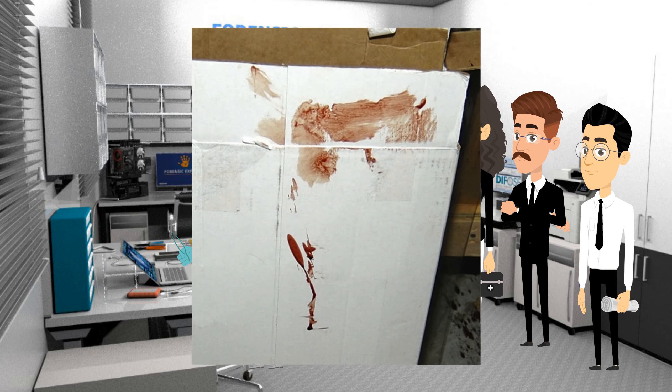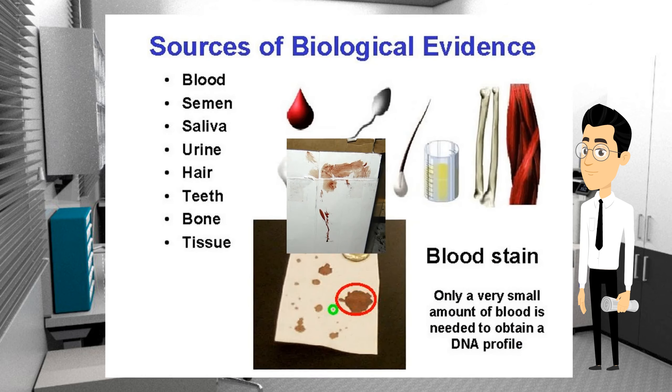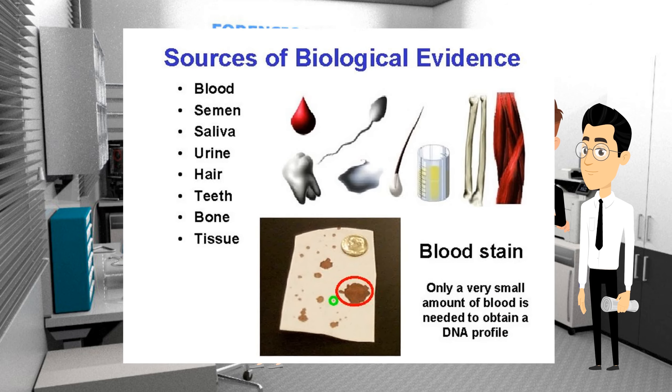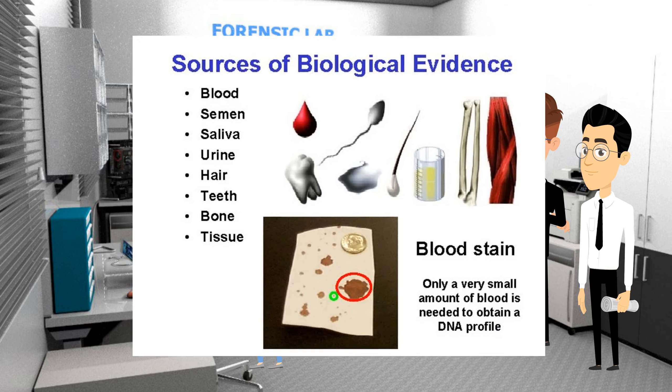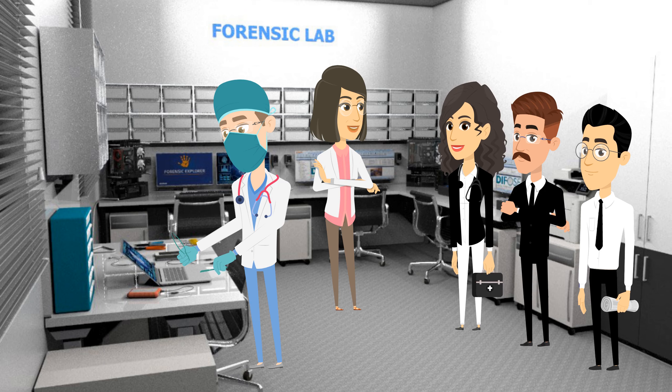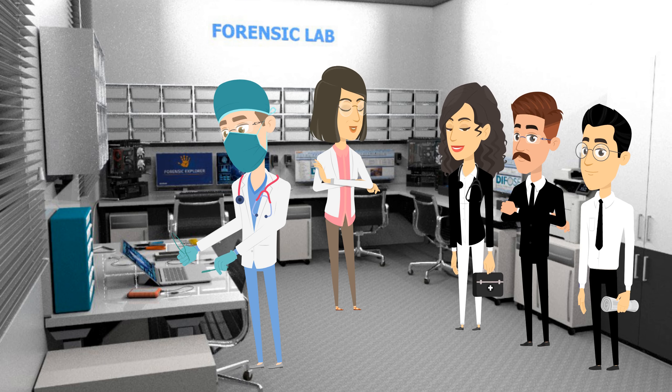Blood-stained body fluid and hair are the biological evidences. These types of evidences are mostly available in murder cases, injuries, road accidents, and multiple types of other cases.